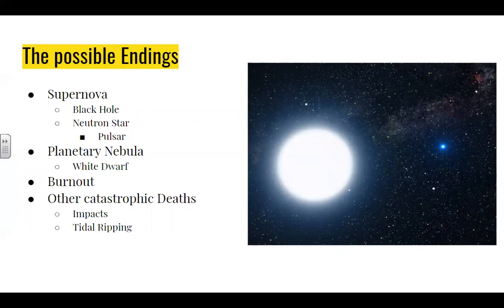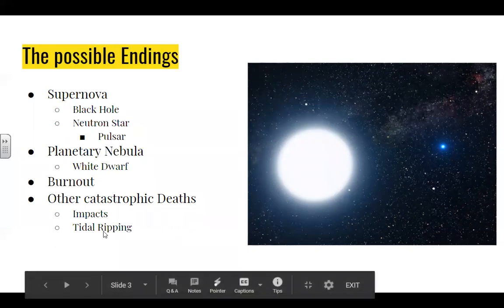If a star close to us goes supernova, it would be a bad day for us. Thankfully there are no stars large enough to go supernova in an area that would destroy us. We could get some serious radiation from a supernova explosion — for instance, when Betelgeuse goes, we could get some serious radiation from that and that would be a bad day. But stars exploding can even rip apart planets outside of that star system depending on how far you are away from the explosion.